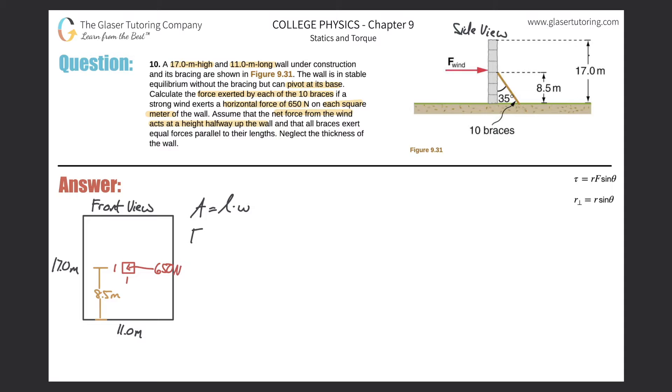Area will simply be length times width. To find the total force, it would simply be that area multiplied by the force per area, which they told us was 650 newtons. For the total force, we already have a nice little formula: length times width times the force per area. We know all three of these variables, and therefore we can find the total net force acting at the center of the wall.